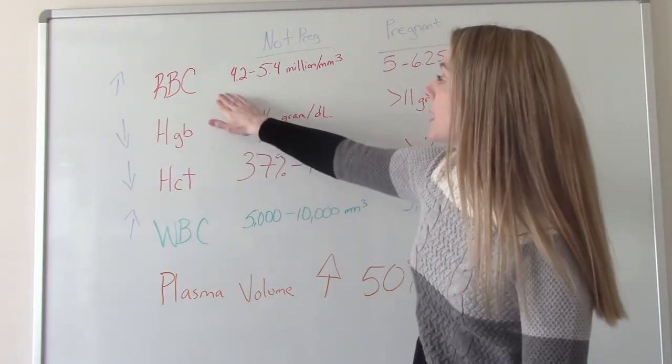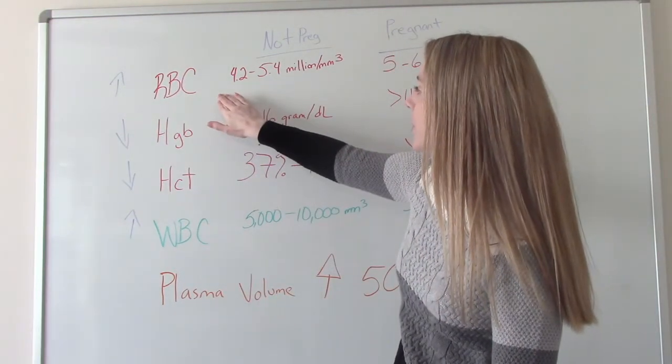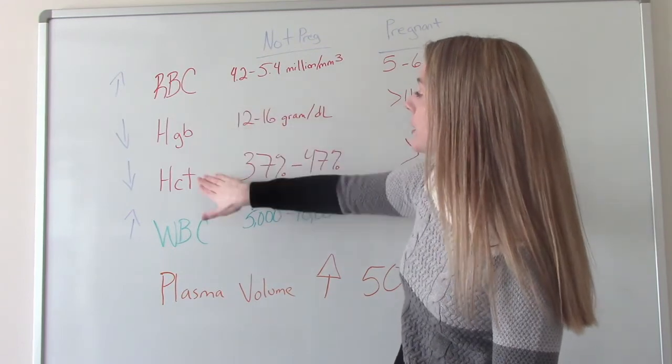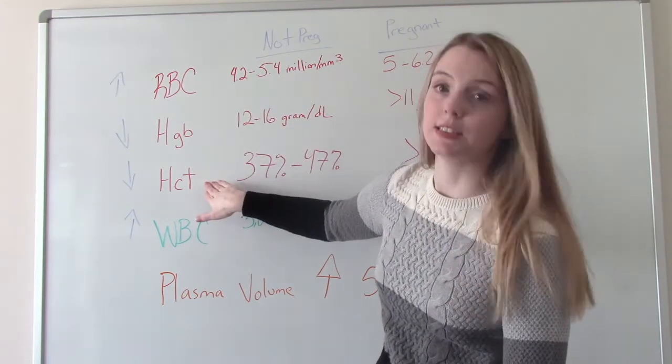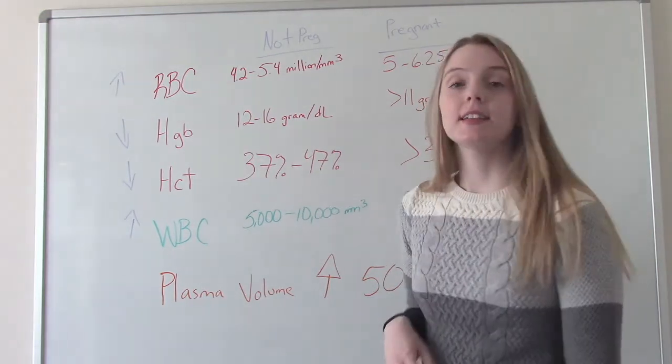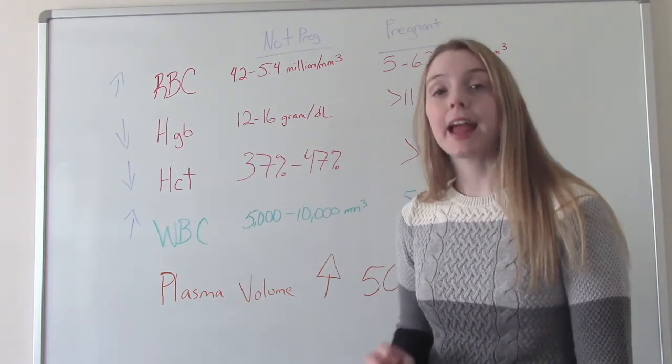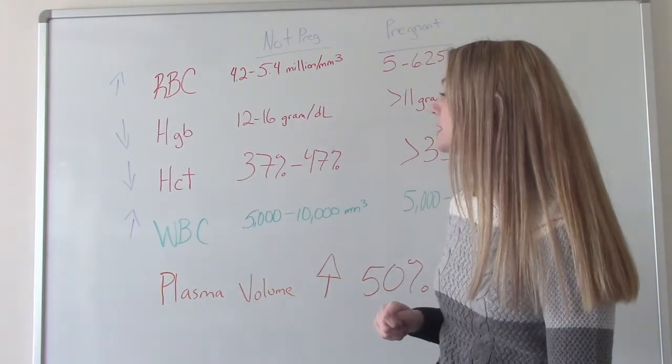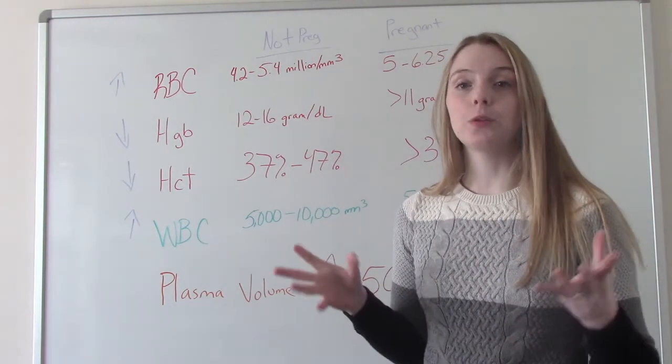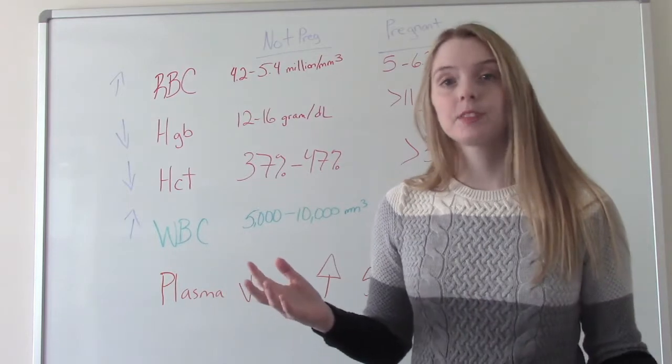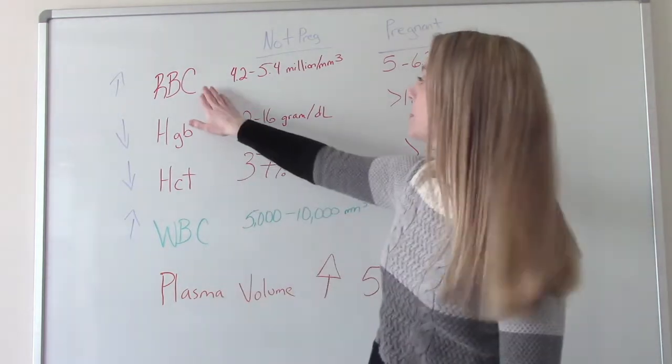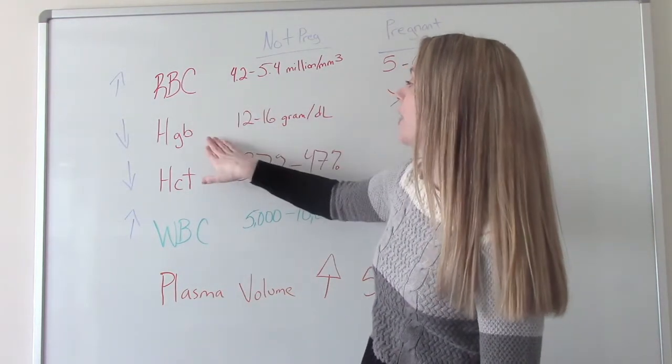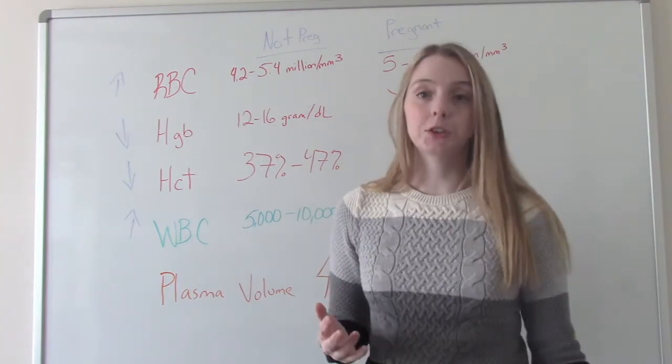Because our red blood cells have increased and we have more volume, our hemoglobin and hematocrit naturally will decrease. If you remember, hemoglobin is the oxygen carrying capacity of the blood and the hematocrit is the percent of total blood volume that is red blood cells. So it would make sense that if our number of red blood cells increases, that our hemoglobin and hematocrit would naturally decrease.